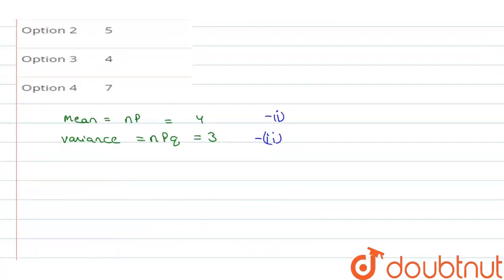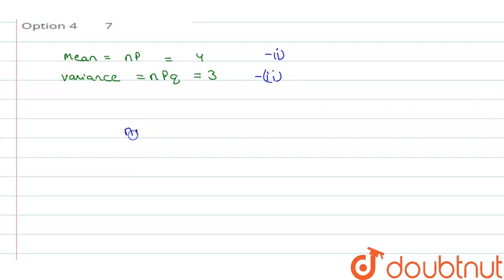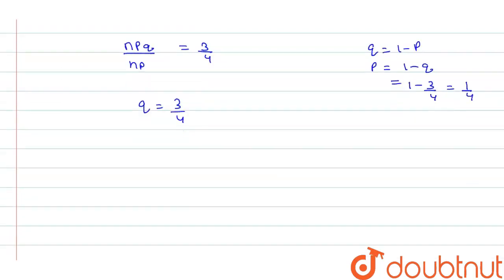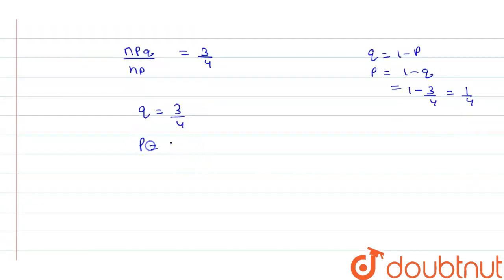So by dividing equation number 2 by equation number 1 we can say that npq divided by np this is basically equal to 3 by 4. So from here we can get q equal to 3 by 4 and also we know that q equal to 1 minus p so from here we can say that p equal to 1 minus q which equal to 1 minus 3 by 4 which equal to 1 by 4.